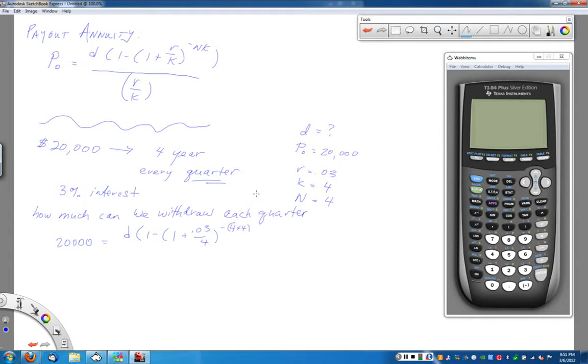Let's see here. There we go. I do want to put that negative 4 times 4 in parentheses, but we'll just put the whole thing there, that's a little bit better. Close that off, and then it's all divided by R divided by K, which was 0.03 divided by 4, which is the number of compounding periods. So here's my equation.